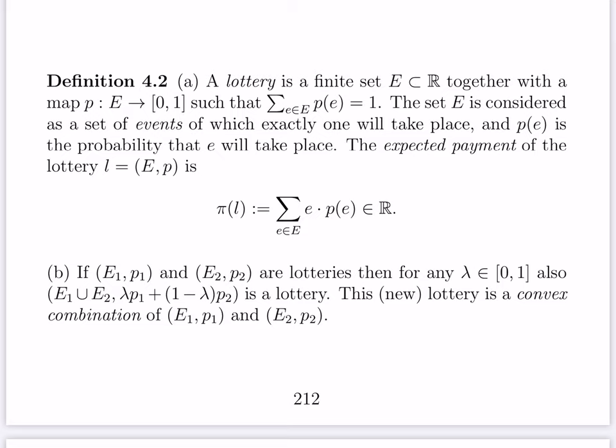A lottery is a finite set E of real numbers together with a probability distribution on the set — a map p from E to the interval [0,1] such that the sum of p(e) for all e in E equals 1. The elements of E are events, one of which will take place, and p(e) is the probability that event e will occur.